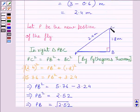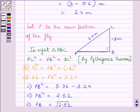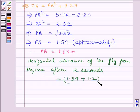C is the tip of the rod and P is the new position of the fly, so PB is the horizontal distance between the new position of the fly and the point directly under the tip of the rod. The horizontal distance between Nazima and the point under the tip of the rod is 1.2 meters. Therefore, the total horizontal distance of the fly from Nazima after 12 seconds is PB + 1.2 = 1.59 + 1.2 = 2.79 meters.